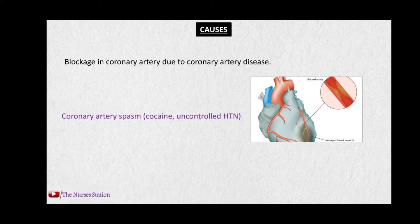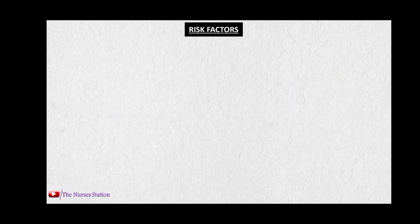Coronary artery spasm can be due to drugs like cocaine or uncontrolled hypertension. Damage to the coronary artery may be due to dissection, where there is a tear in the tunica intima — the innermost layer of blood vessels — and blood starts to leak into the tunica media, the middle layer. This limits the lumen of the artery and the blood supply to the myocardium is limited or stopped.